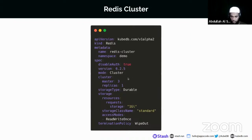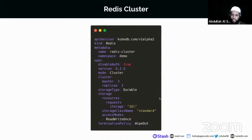The version is 6.2.5, which will use the official Redis image release 6.2.5. The termination policy is WipeOut, which means when we delete this database it will delete everything including PVCs, secrets, and all other things it created — no trace left of the database. I've set this termination policy to create the disaster scenarios. You can use other termination policies; you can go to our docs to learn which one suits you.